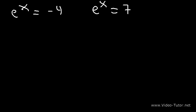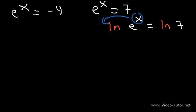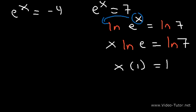Let's start with the equation on the right side: e to the x equals 7. Taking the natural log of both sides: ln e to the x equals ln 7. Moving the exponent to the front gives x times ln e equals ln 7. Since the natural log of e is 1, x equals the natural log of 7. That's the first answer.